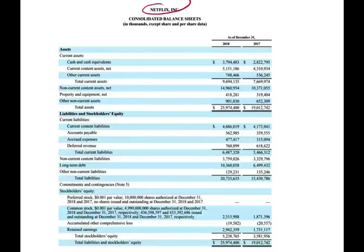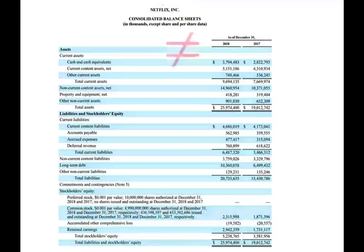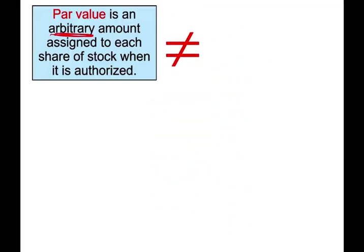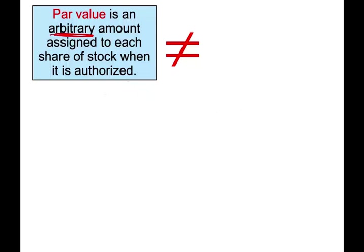Let's also look at Netflix for illustration. Notice here the par value is $0.001. The par value is an arbitrary amount assigned to the stock. Netflix has 4.99 billion shares authorized, of which 436 million are issued. The par value could be any amount assigned to the stock, and a company could also have no par value — they don't have to have a par value. But if they do, we will see how it is used. It's an arbitrary amount assigned to a stock when it's authorized.